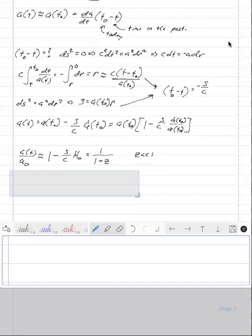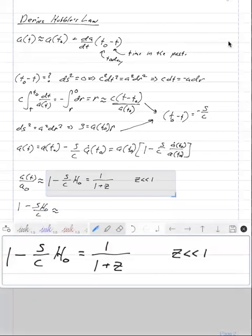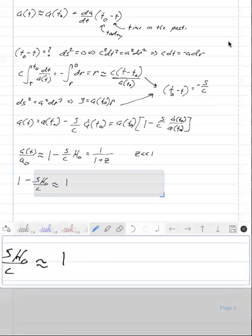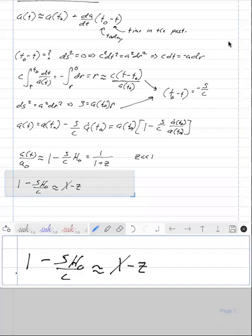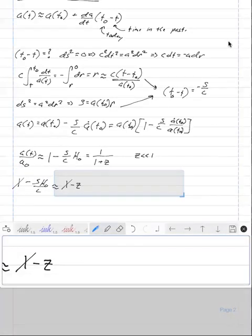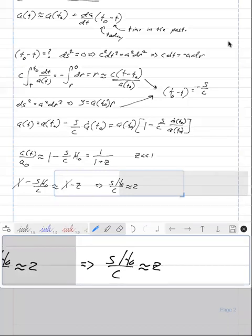I'm going to rewrite the left hand side. One minus s h naught over c is roughly equal to the Taylor series expansion of one over one plus z, or one plus z to the minus one. This is roughly equal to one minus z. The ones cancel and the negative signs go away.